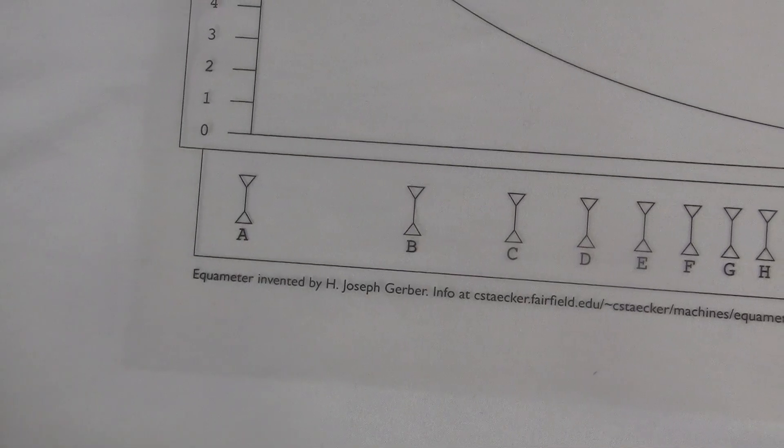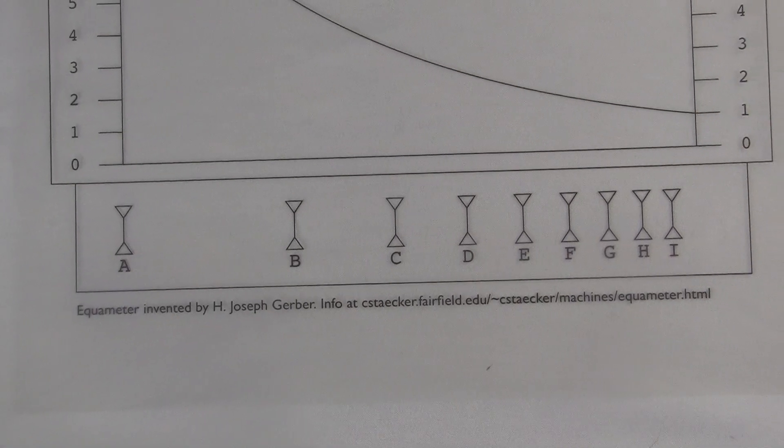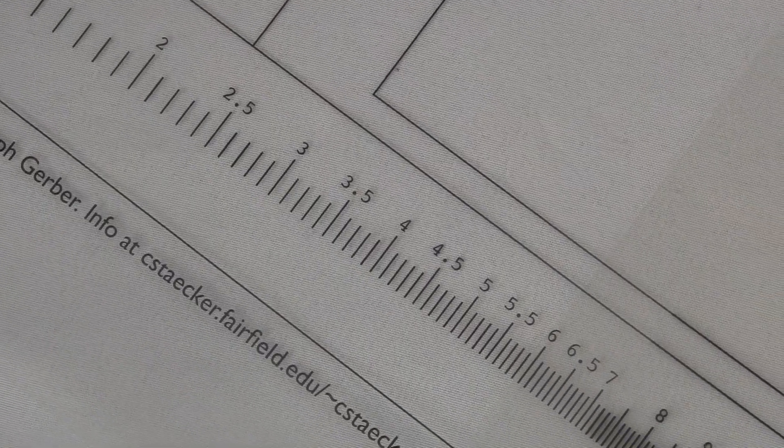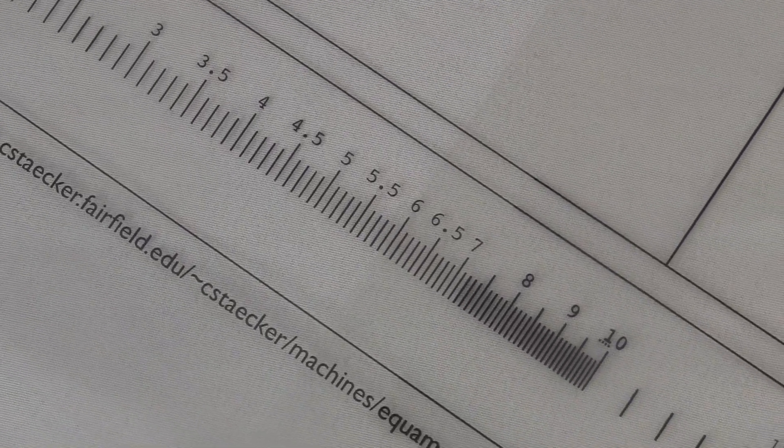I should probably come clean and tell you that I'm not sure how you're supposed to pronounce this word. It's a device for measuring the equation of a curve on paper. So that equa is for equation. So could it be equameter? It's not really a good name. Maybe it sounded better to Joe. I actually tried to contact his son, David Gerber, and ask him how it's pronounced. I wrote him an email, but I'm not sure I had the right address.